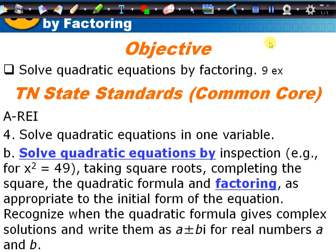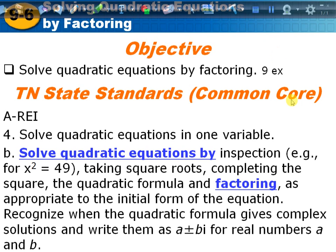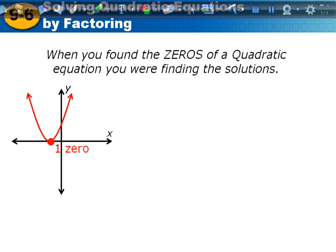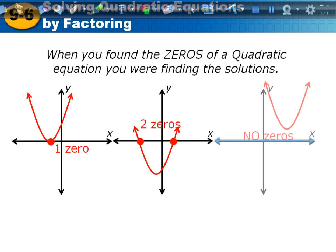Today's lesson is 9-6, and we're going to solve quadratic equations by factoring. When you found the zeros of a quadratic equation, you were finding the actual solutions to them. Finding zeros means we find where the parabola crosses the x-axis. It can cross in one place, two places, or not cross the x-axis at all.